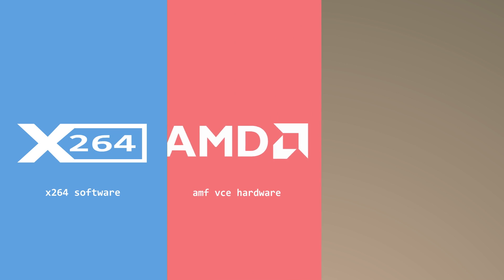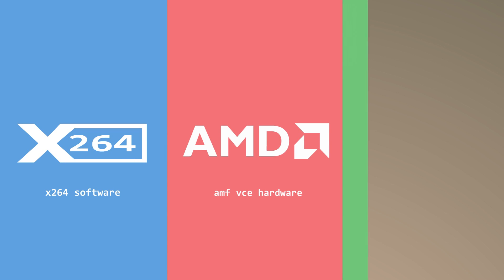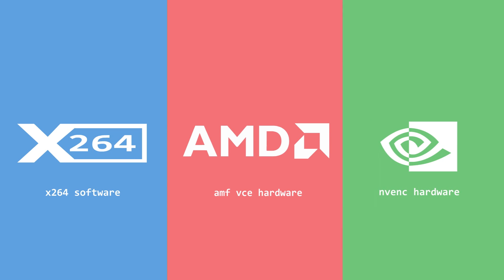Sup guys, SneakyJers here, and today we're looking at these three popular encoders — X264, VCE, and NVENC. These are three encoders with different features, by which you can stream high-quality videos in real-time.